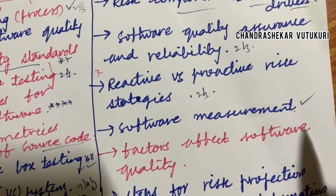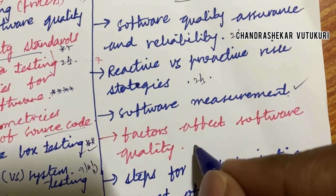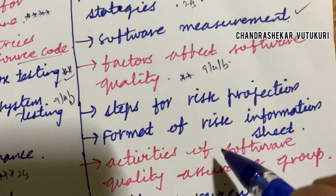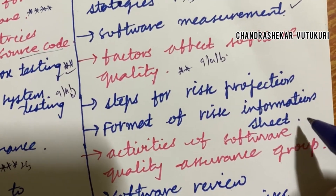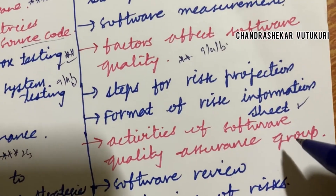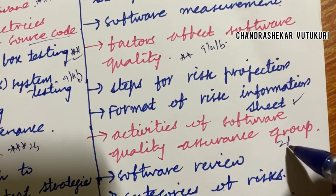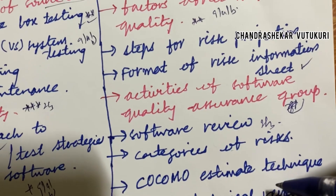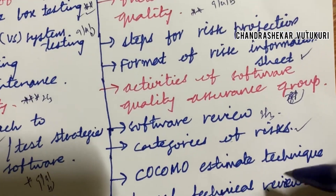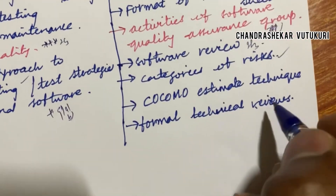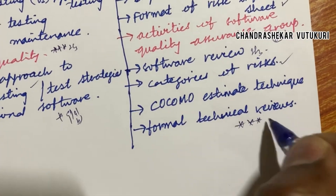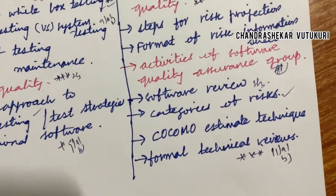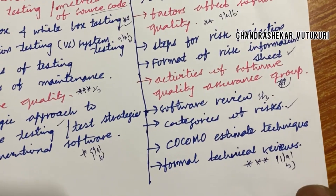Software measurements and factors affecting software quality may be a top most 9A/9B question. Steps for risk projection, format of risk projection, risk information sheet, and the activities of the Software Quality Assurance group may be a long question. Software review may be a two or three mark question. Categories of risk may be a top question. Estimation techniques and formal technical reviews may be top most short questions appearing as 11A as well as 11B.